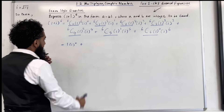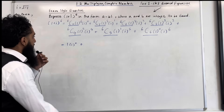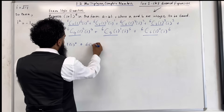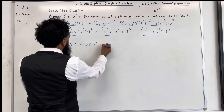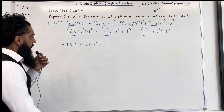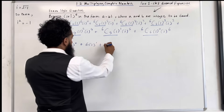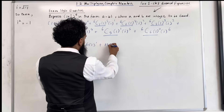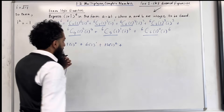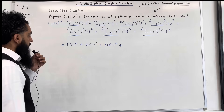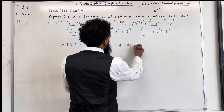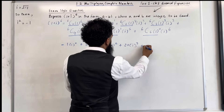Plus the second term becomes 6 lots of i to the power 1. Next term: 15 lots of i to the power 2. Then 20 lots of i to the power 3.